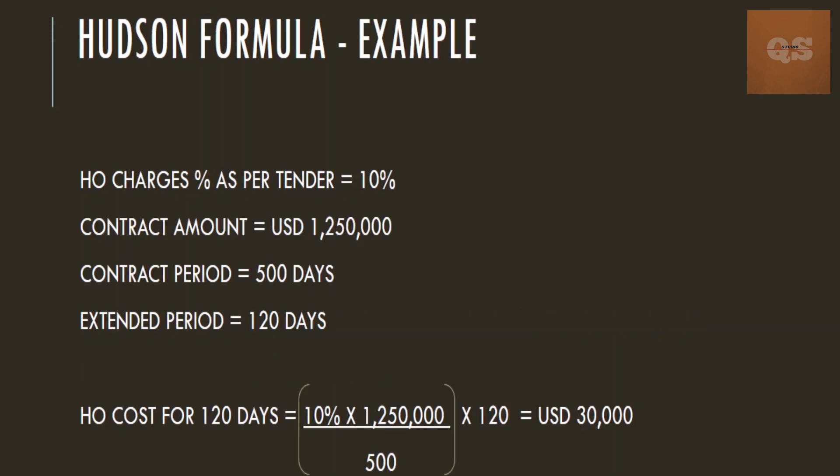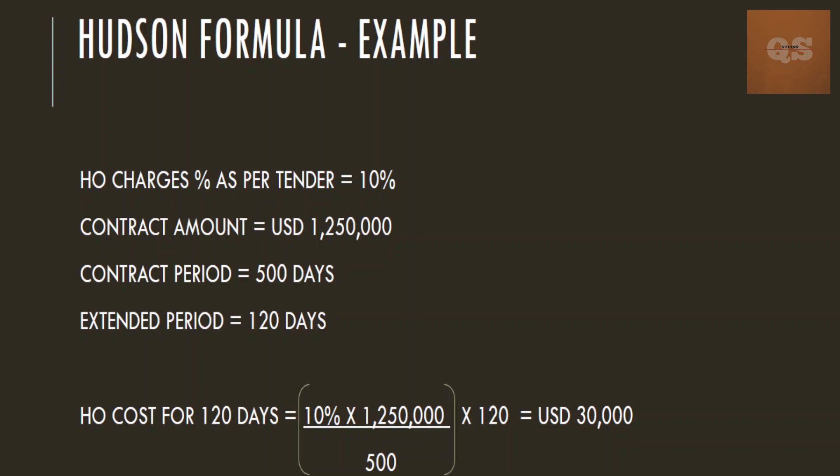The head office charges percentage is given as 10% in your tender document. Your contract amount is 1.25 million US dollars, your contract period is 500 days, and your extension period is 120 days. Using the Hudson formula, the head office cost for 120 days equals 10% multiplied by 1.25 million US dollars, divided by 500 (which gives the head office cost for one day), then multiplied by 120 days. When you calculate, you get approximately US dollars 30,000.